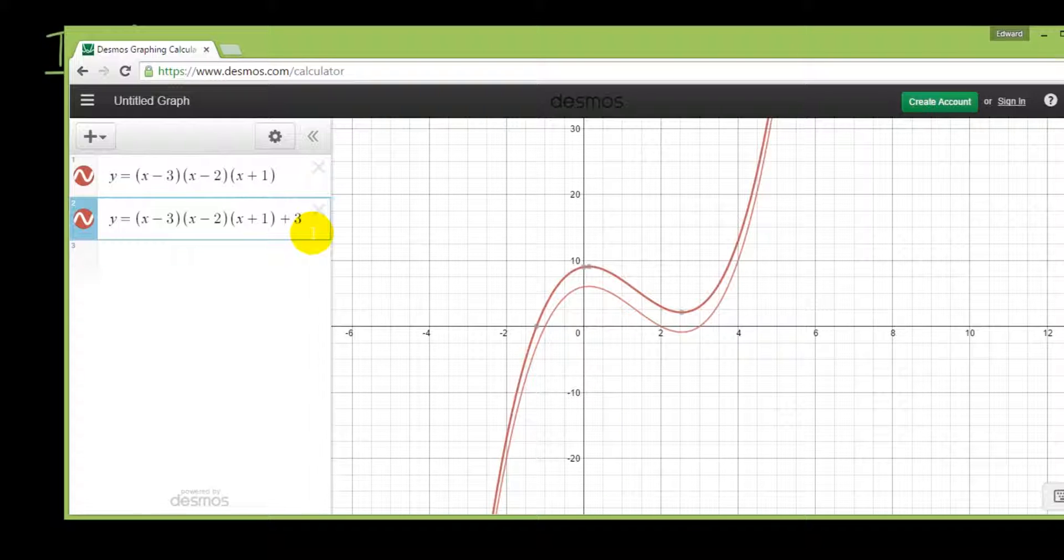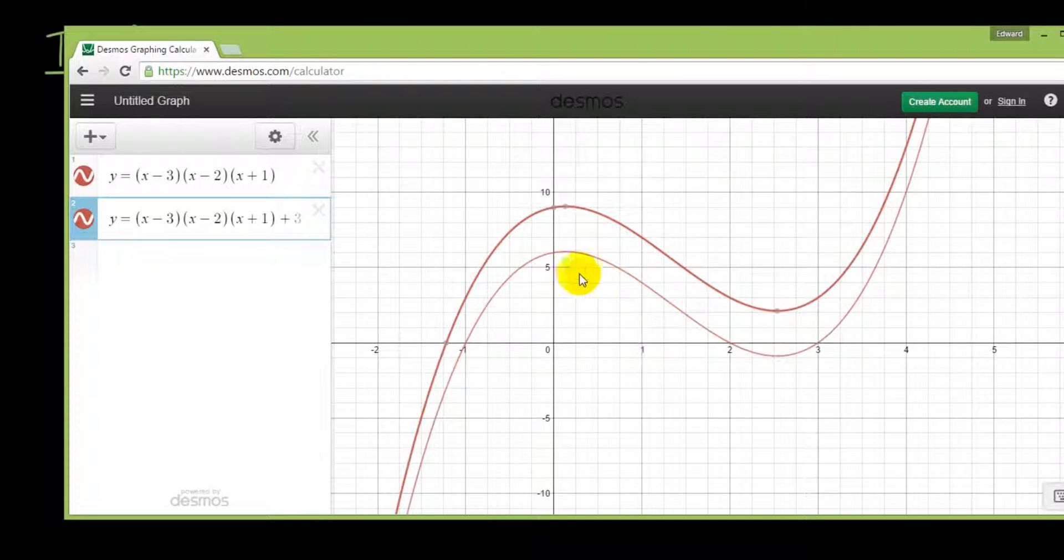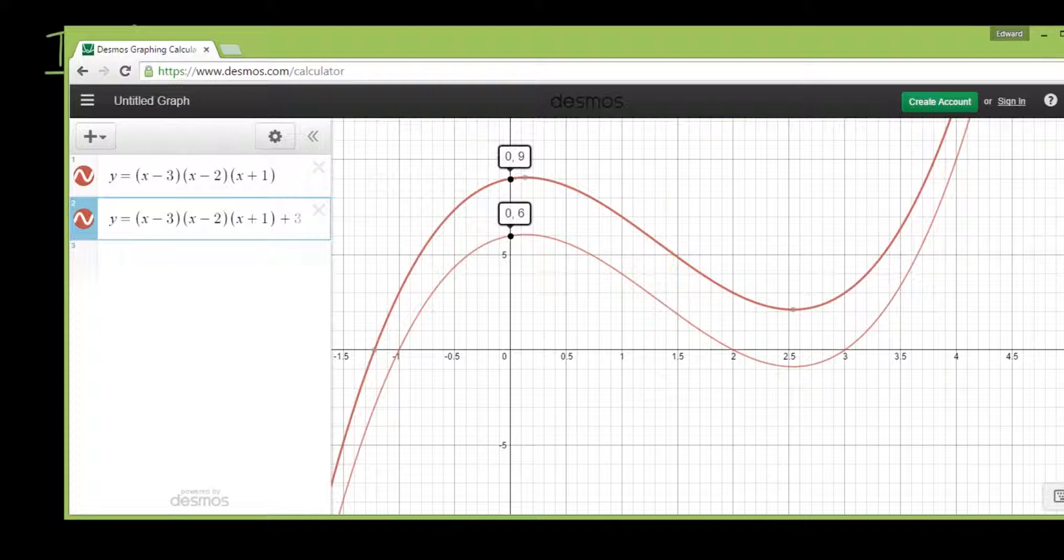On the end you can see that the whole graph has been shifted upwards 3 units. So for example, originally x is equal to 0, y was equal to 6, but now when x is 0, y is equal to 9. And the same with every single other point, it's been translated up by 3 units.